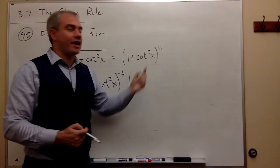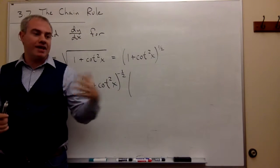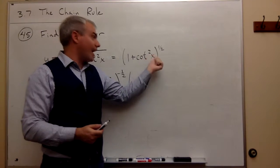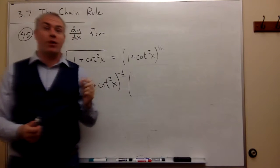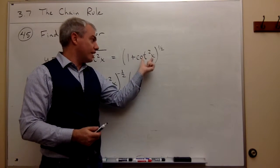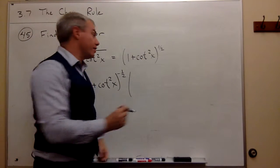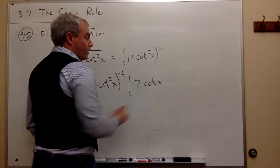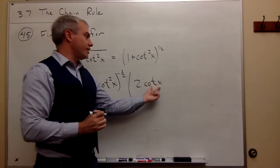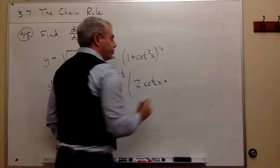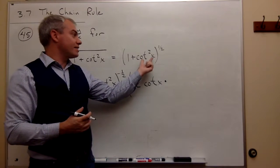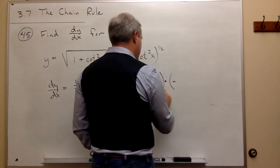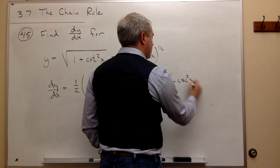When I look at cotangent squared of x, I ask: what happens first? I take the cotangent of x and then I square it. So the last thing that happens is a square. The derivative of something squared is 2 times that something — so 2 cotangent of x to the first power — times the derivative of what was on the inside, which was cotangent x. And the derivative of cotangent of x is negative cosecant squared of x.